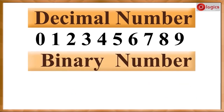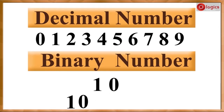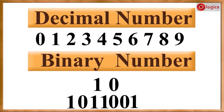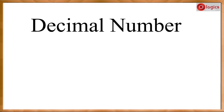The binary number system: binary means two. This is a two-number system, meaning you can form any number using only these two digits — that is one and zero. To store a decimal number in the computer, it has to be converted into a binary number, because the computer understands binary language only.